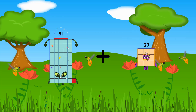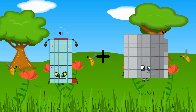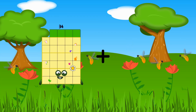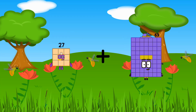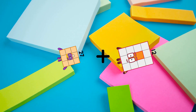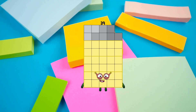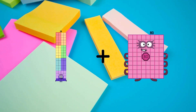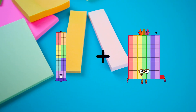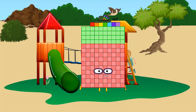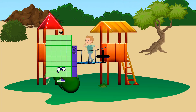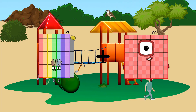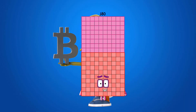51 plus 99 equals 150. 27 plus 12 equals 39. 76 plus 71 equals 147. 79 plus 101 equals 180.